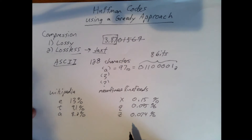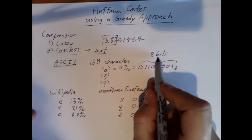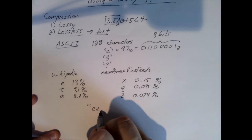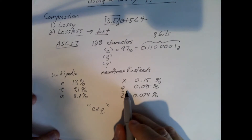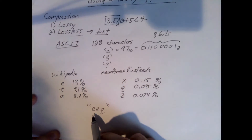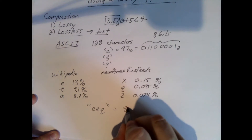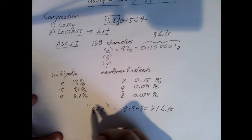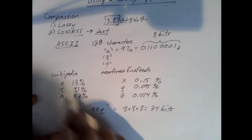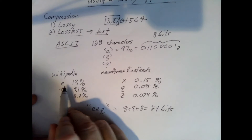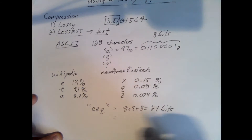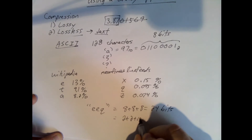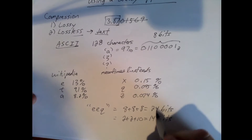All ASCII characters take eight bits of space, but what if we had the character string 'EEQ'? Since E shows up much more often than Q, instead of giving every character eight bits — 8 + 8 + 8 = 24 bits — what if we used only two bits for the E's and more for Q? Using two bits for E and ten bits for Q gives 2 + 2 + 10 = 14 bits, saving 10 bits.